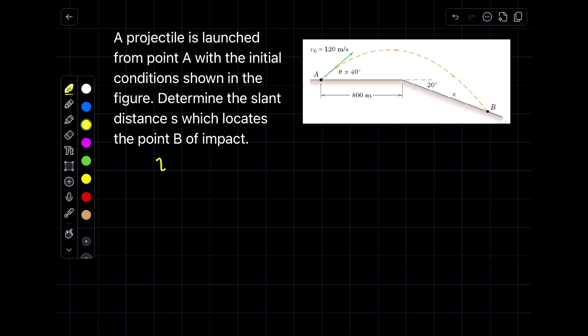Hello everyone, today I am going to solve this problem. In this problem, a projectile is launched from point A with initial velocity of 120 meters per second. There is a slant distance as seen in this picture. So we have to find the point of contact or impact of the projectile at position B and the time of the flight.